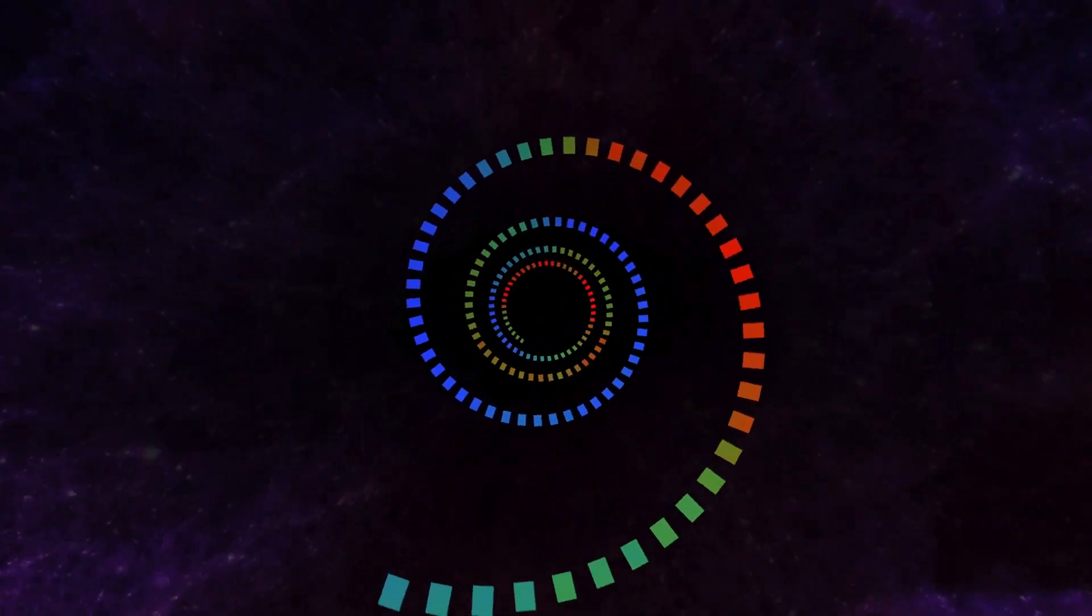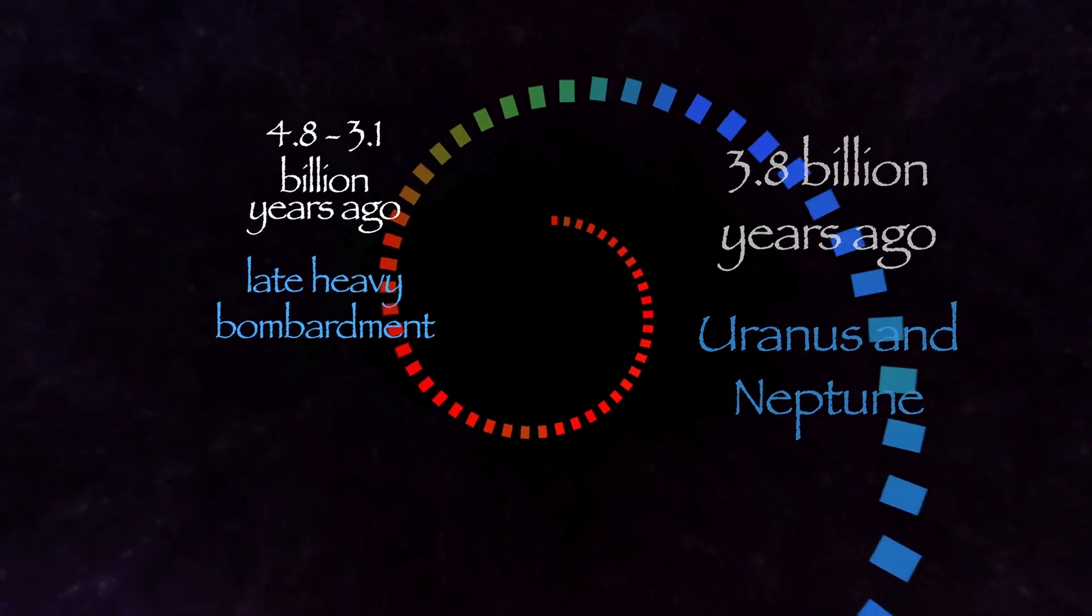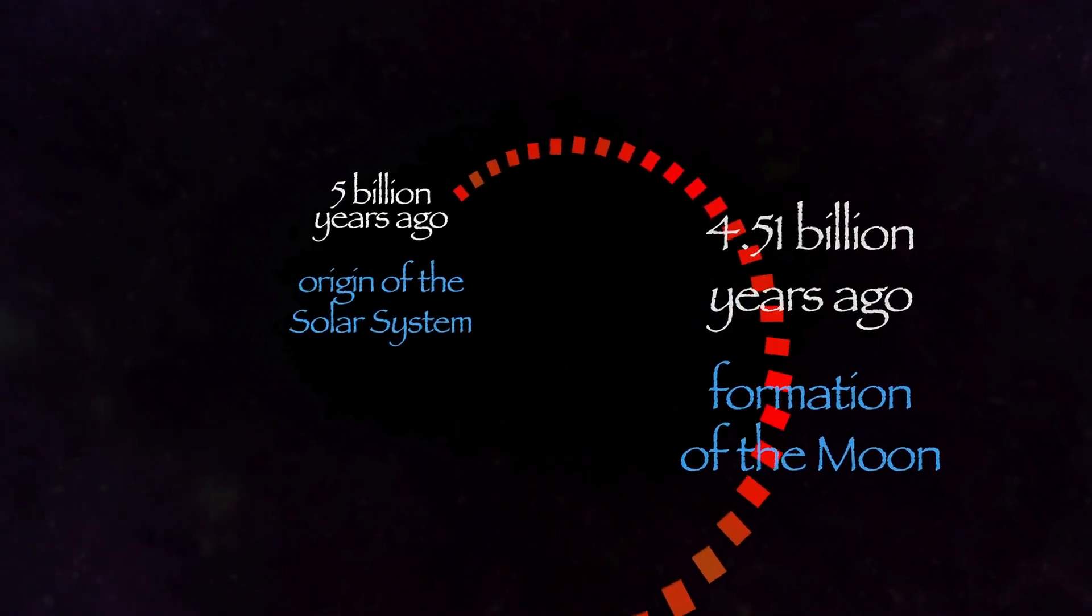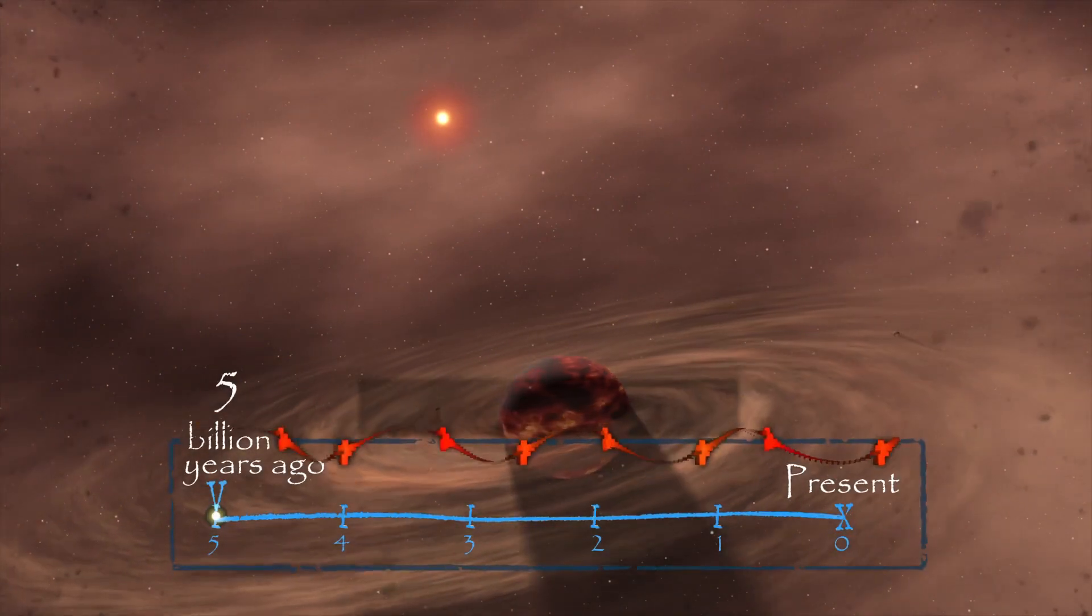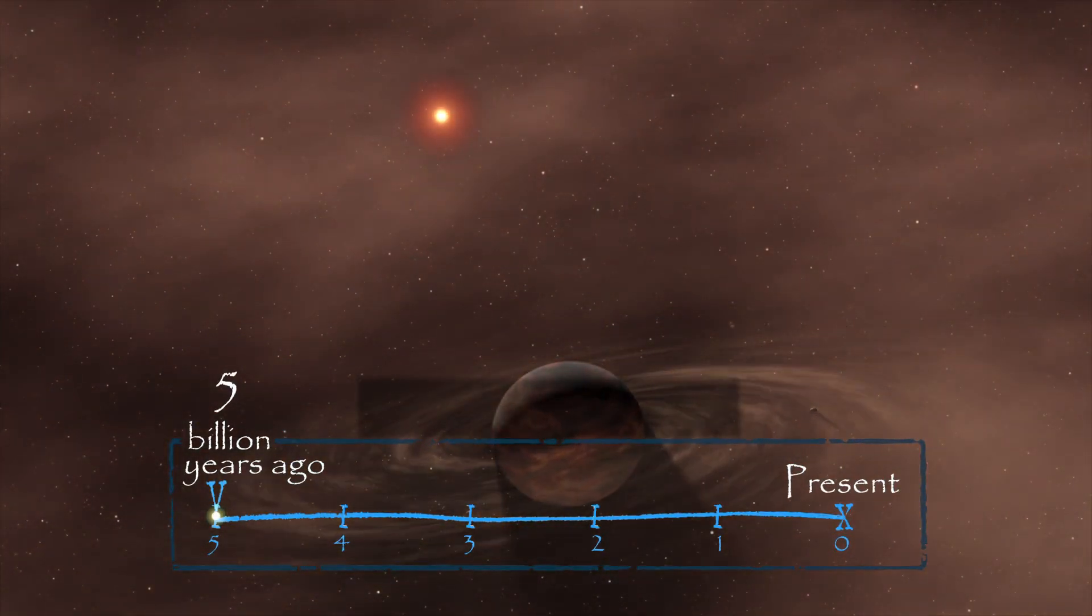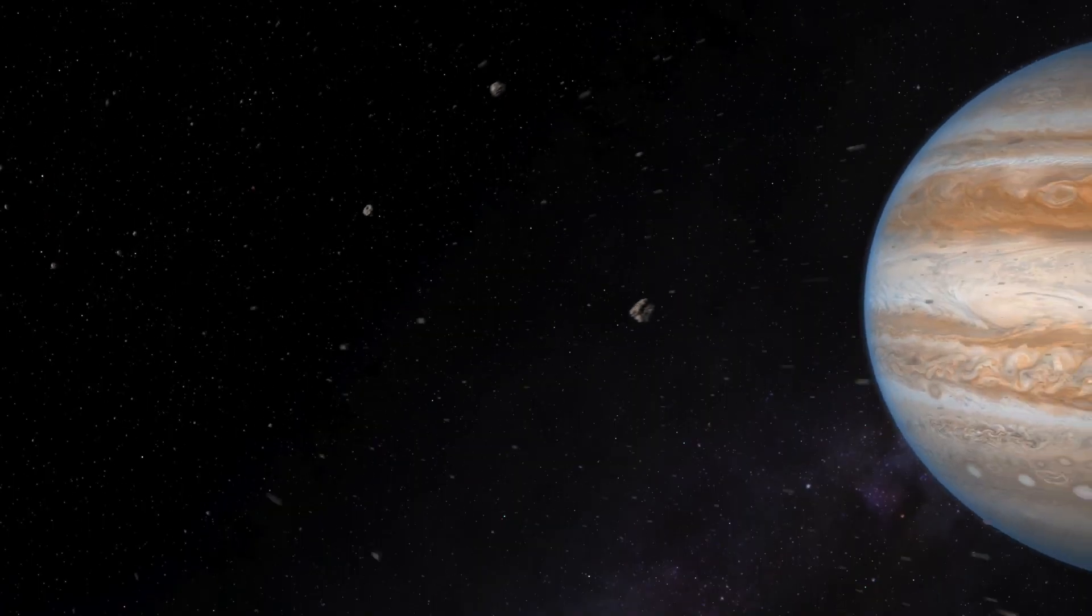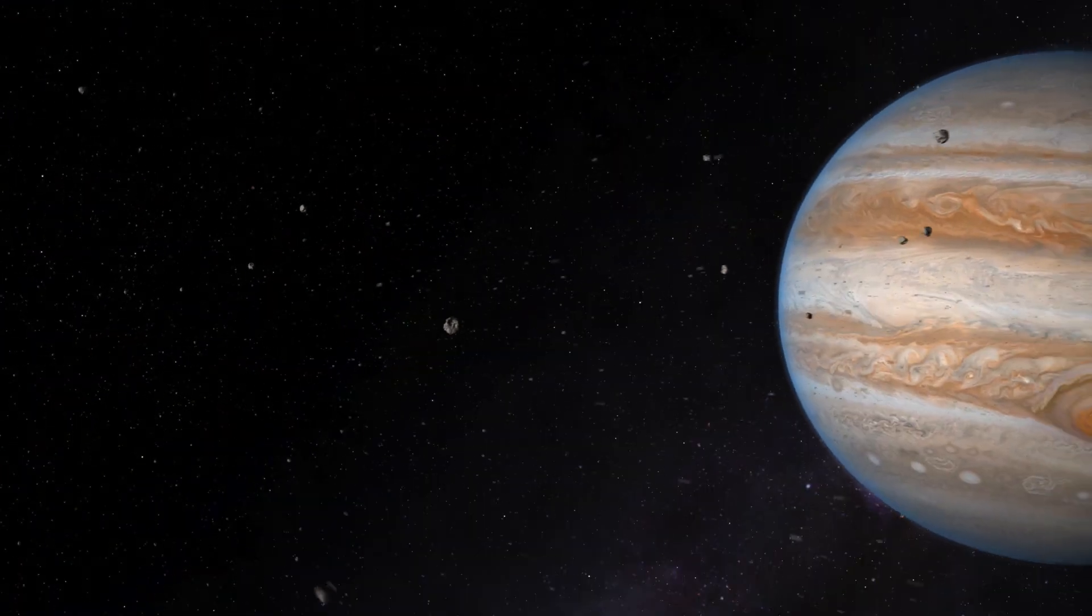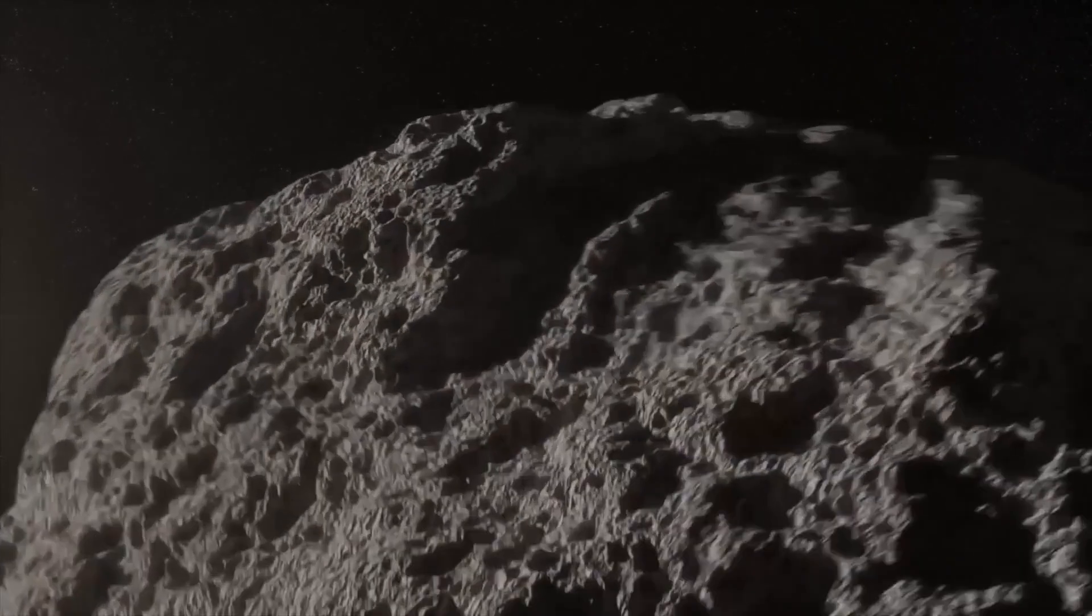It is called the Grand Tack Hypothesis. Four and a half to five billion years ago, a gas giant planet arose inside a primordial disk of gas and dust. Jupiter didn't just form where it is, but formed and then moved inward towards the sun. As it spirals toward the sun, Jupiter herds asteroids and rubble.